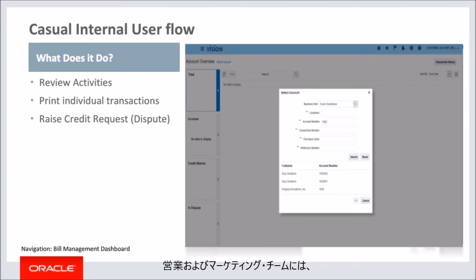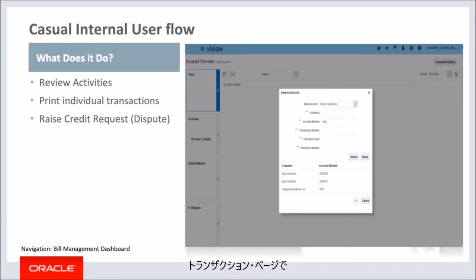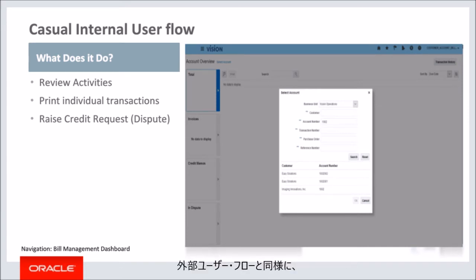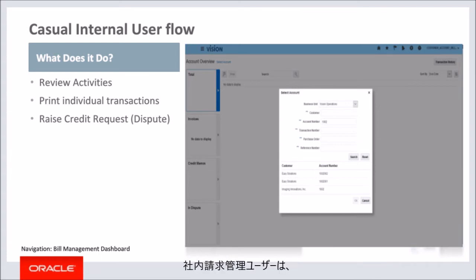The sales and marketing teams can be granted the internal bill management role to provide limited access to view customer transaction information. They are allowed to review only one account at a time. An internal user can review activities such as payments, disputes, and adjustments on the transaction page. Similar to the external flow, only printed transactions which are delivered to the customer are visible in bill management. An internal bill management user is not allowed to make payments unless explicitly provisioned for.